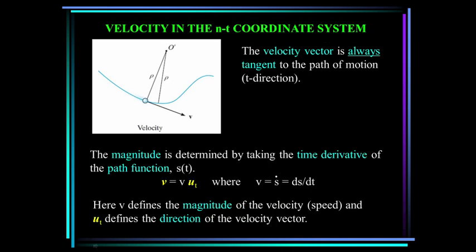It's important to remember this: the velocity vector is always tangent to the path of motion. The magnitude is determined by taking the time derivative of the path function, s. So velocity is v times u-sub-t, where v is the time derivative of the path function s. Unbolded v is the magnitude of the velocity, also known as the speed, and u-t, the unit vector t, defines the direction of the velocity vector.